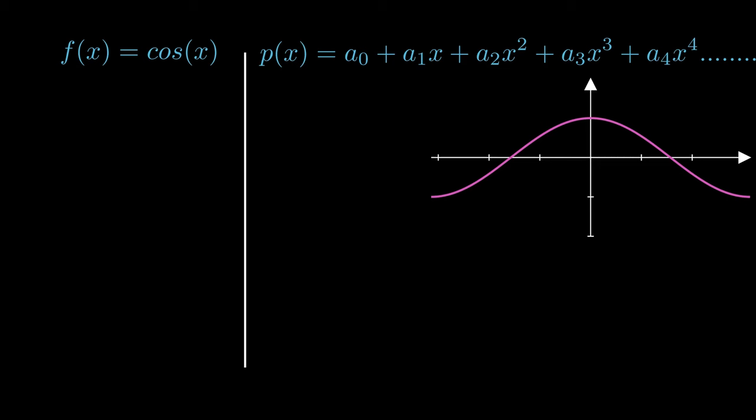The cosine function is 1 at x equals 0. If p of x is supposed to look like the cosine function, it should also behave the same, right?